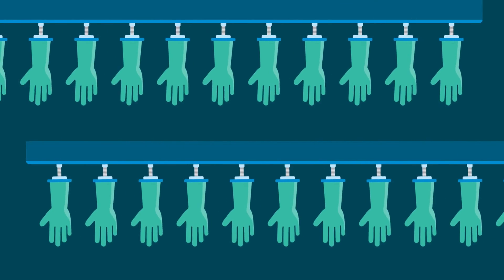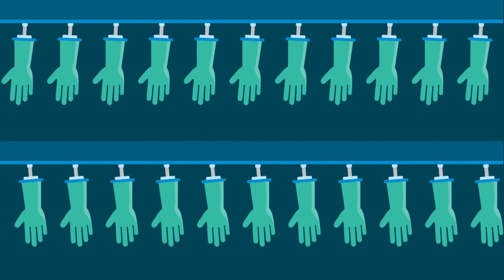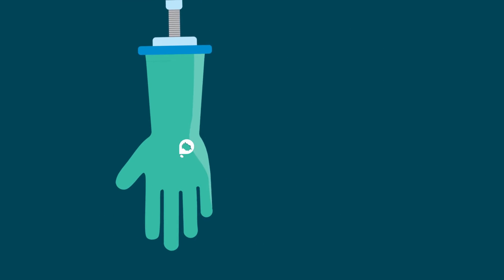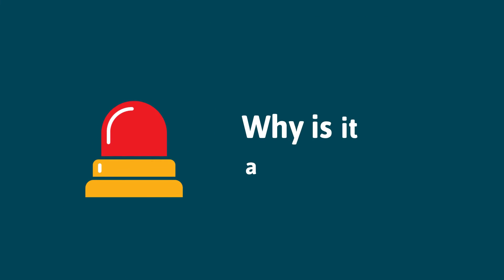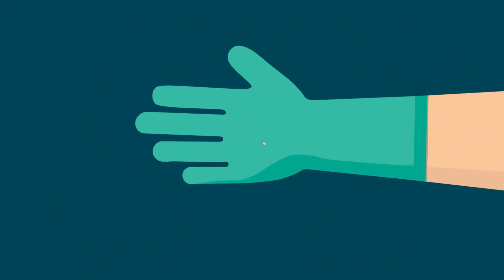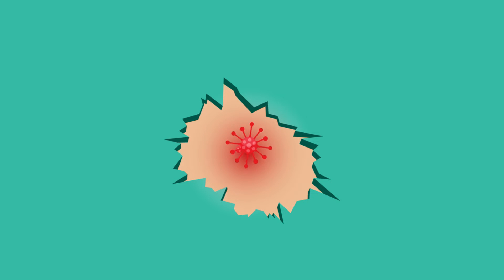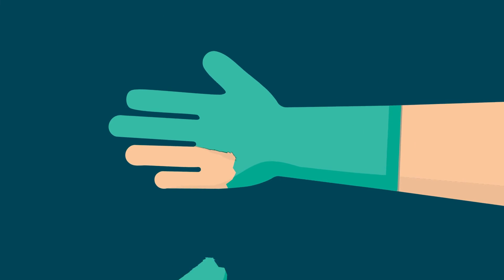On a manufacturing line that produces thousands of disposable gloves each day, it is inevitable that some gloves may have tiny pinhole defects. Why is it a problem? Workers who wear gloves with a pinhole defect may be at risk because harmful materials can seep through the pinhole, and gloves may rip or tear more easily.